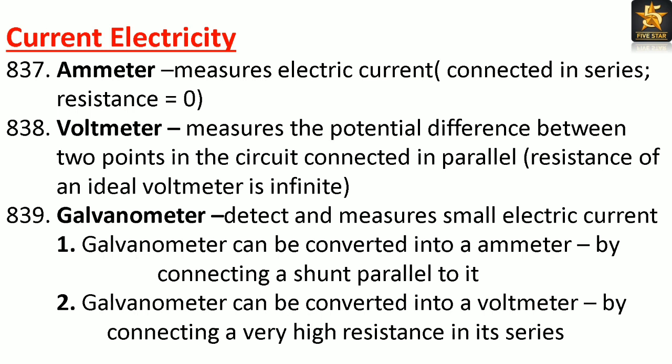Ammeter: measures electric current, connected in series, resistance equals zero. Voltmeter: measures the potential difference between two points in a circuit, connected in parallel; resistance of an ideal voltmeter is infinite. Galvanometer: detects and measures small electric current. It can be converted into an ammeter by connecting a shunt in parallel, or into a voltmeter by connecting a very high resistance in series.